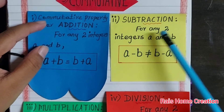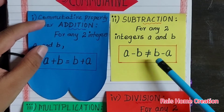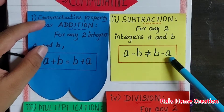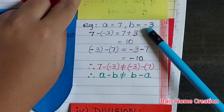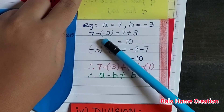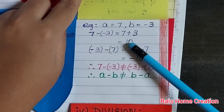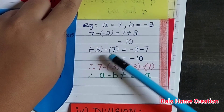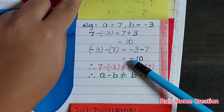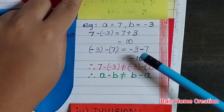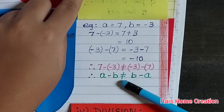Subtraction. For any two integers A and B, A minus B is not equal to B minus A. Example: A equal to 7, B equal to minus 3. 7 minus minus 3 equal to 7 plus 3 equal to 10. Minus 3 minus 7 equal to minus 3 minus 7 equal to minus 10. Both the answers are different. Hence, the condition is not equal.